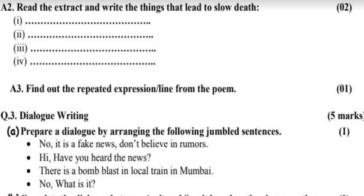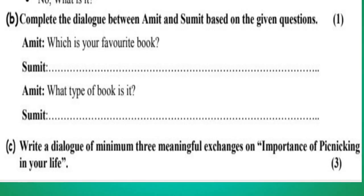Question number 3: Dialogue writing. A. Prepare a dialogue by arranging the following jumbled sentences. 1. 'No, it is a fake news. Don't believe in rumors.' 2. 'Hi, have you heard the news?' 3. 'There is a bomb blast in a local train in Mumbai.' 4. 'No, what is it?' B. Complete the dialogue between Amit and Sumit based on the given questions. Amit said: 'Which is your favorite book?' Sumit will answer. Amit said: 'What type of book is it?' Sumit will answer. C. Write a dialogue of minimum 3 meaningful exchanges on the importance of picnicking in your life.